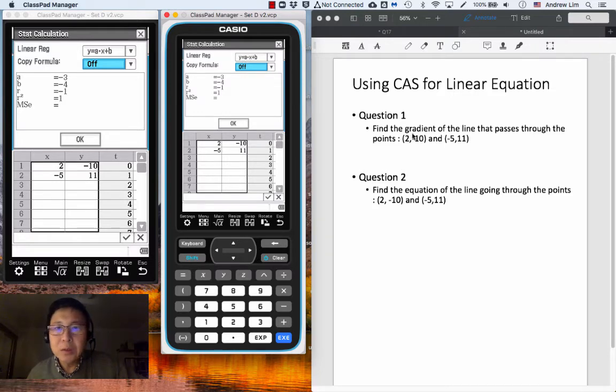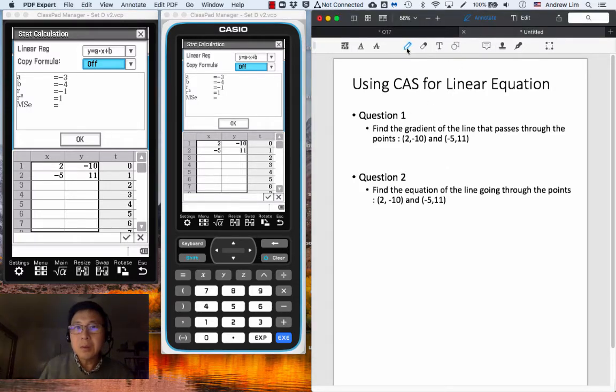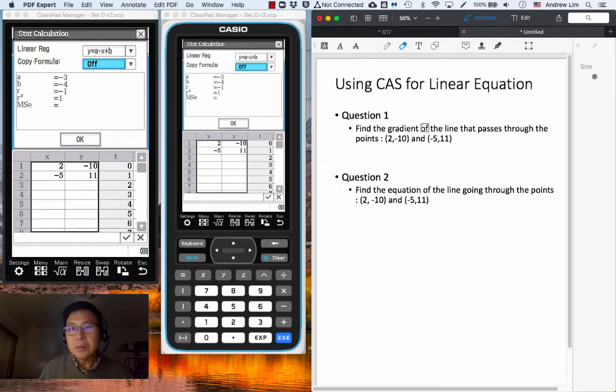So in this case, we know that the gradient of the line that passes through the points 2 comma minus 10 and minus 5 comma 11 is equals to the a here, which is minus 3. All right, so we're going to write that down. Let's use green pen, gradient